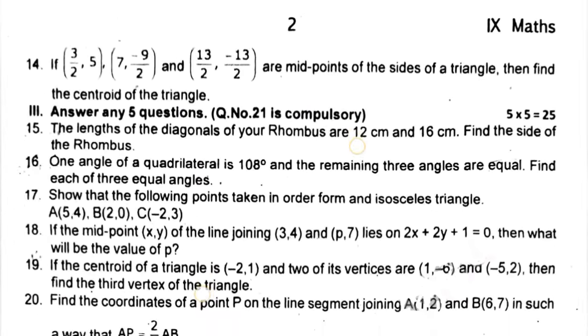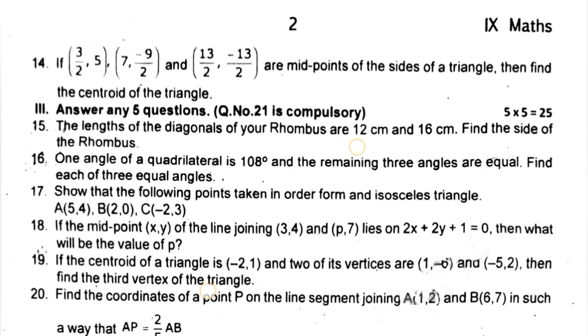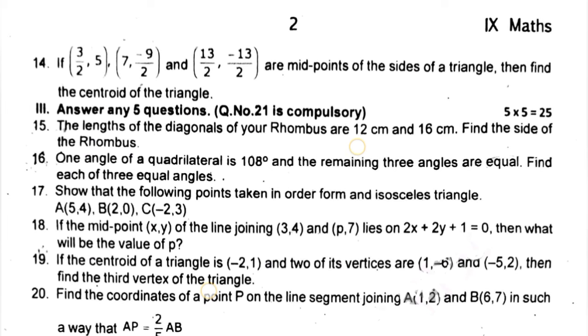In the third section, you can answer any five questions. This is the 21st question, which is compulsory. We have quadrilateral related, rhombus, and already we have important questions.